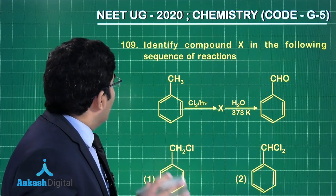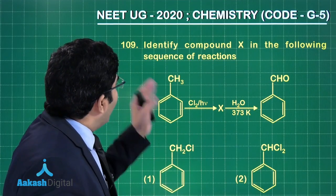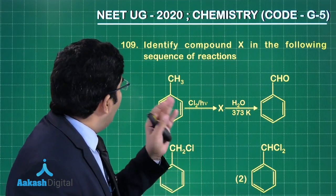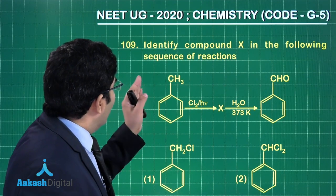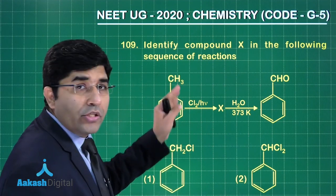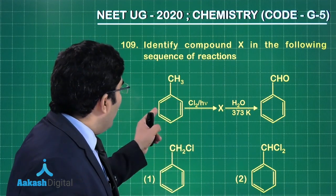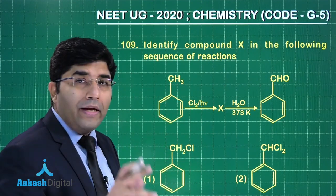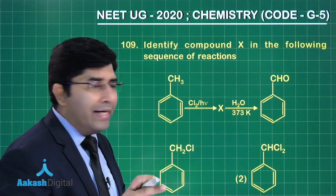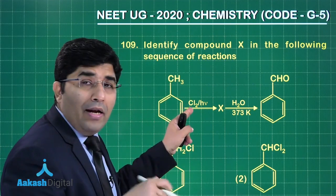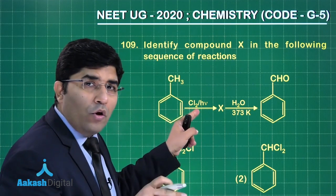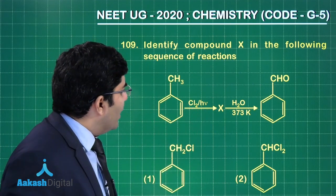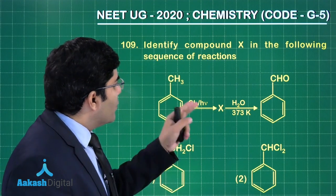This question asks us to identify compound X in the following sequence of reactions: toluene is reacting with chlorine in the presence of light to give us X, and X on hydrolysis at 373 Kelvin gives us benzaldehyde.